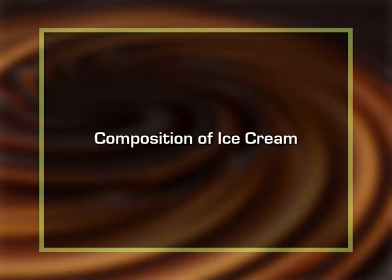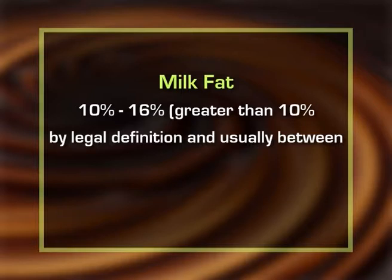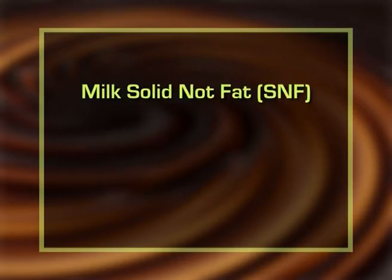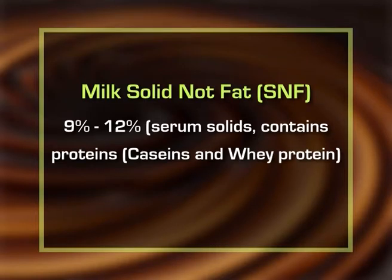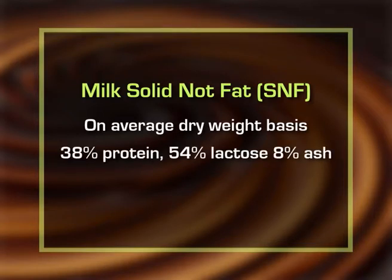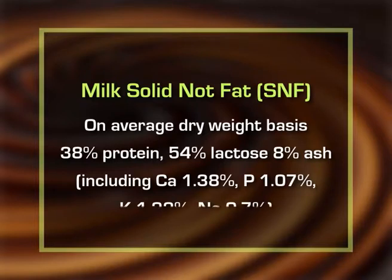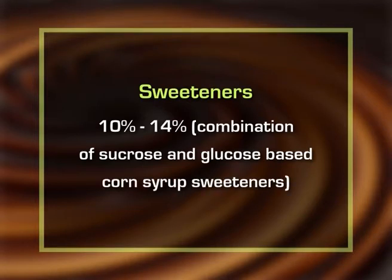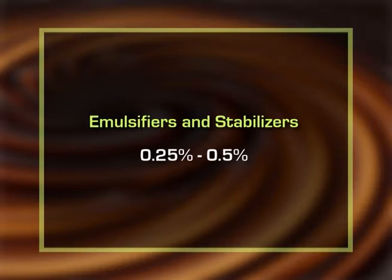Now let us consider the composition of ice cream. It contains milk fat at 10–16% (greater than 10% by legal definition); milk solids-not-fat (SNF) at 9–12%, which includes proteins, caseins, whey protein, and carbohydrates; SNF contains on a dry weight basis approximately 38% proteins, 54% lactose, and 8% ash including calcium 1.38%, phosphorus 1.07%, potassium 1.22%, and sodium 0.7%. Sweeteners make up 10–14%, usually a combination of sucrose and glucose-based corn syrup; emulsifiers and stabilizers 0.25–0.5%; and water 55–64%.